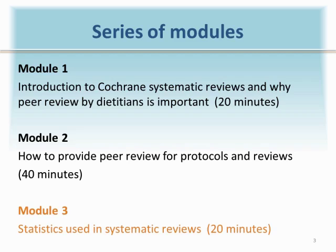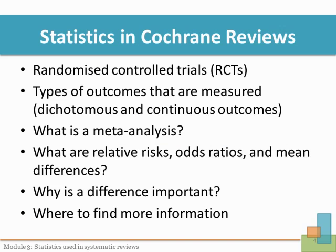This is the third module and provides a brief overview of some of the statistics used in systematic reviews, which should help you while reading and peer reviewing Cochrane systematic reviews. Some of the key concepts that we will cover in this module are about randomized controlled trials and the types of outcomes that are measured.